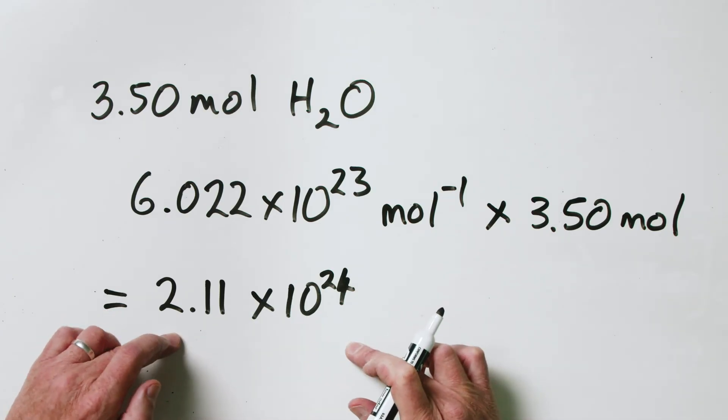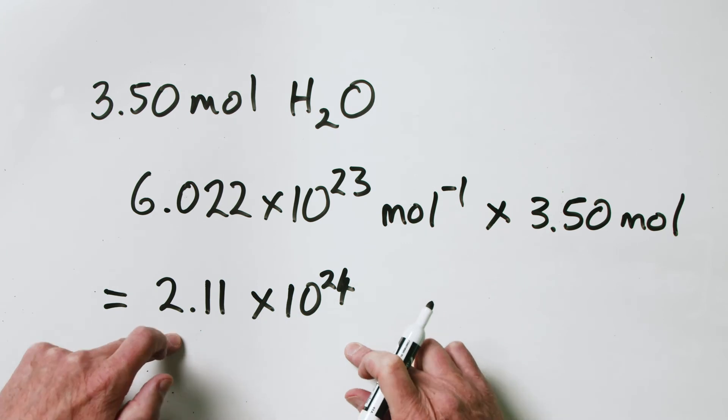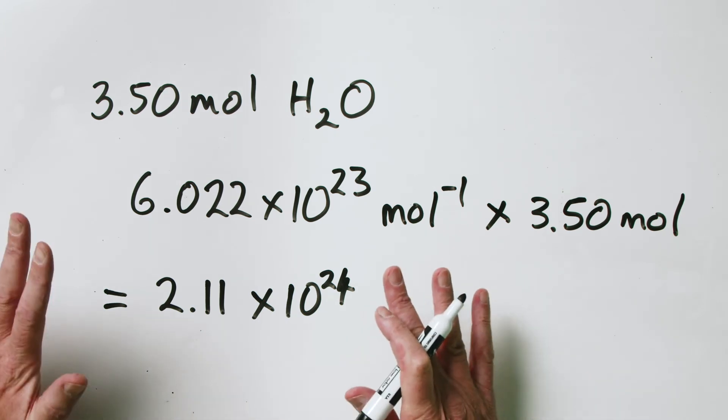The Avogadro constant equals 6.022 times 10 to the power of 23 per mole multiplied by 3.50 moles of water. That gives us 2.11 times 10 to the power of 24 molecules of water in 3.5 moles. So there's the relationship between number of moles and the actual number of entities. And to finish off, how many atoms are present in this 3.5 moles of water?